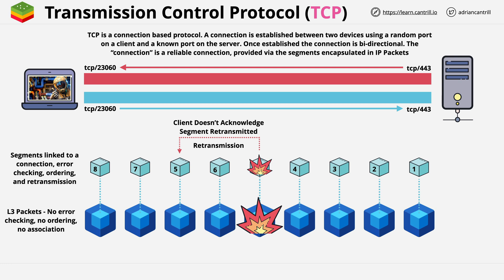When you communicate with the game server, you use a destination port of 443 — a well-known port that the server is running on. As part of creating the connection, you also create a temporary port on your local machine known as the ephemeral port. This uses a higher port range and is temporary. It's used as the source port for segments sent from client to server. When the server responds, it uses the well-known port number as the source and the ephemeral port as the destination — it reverses source and destination for any responses.